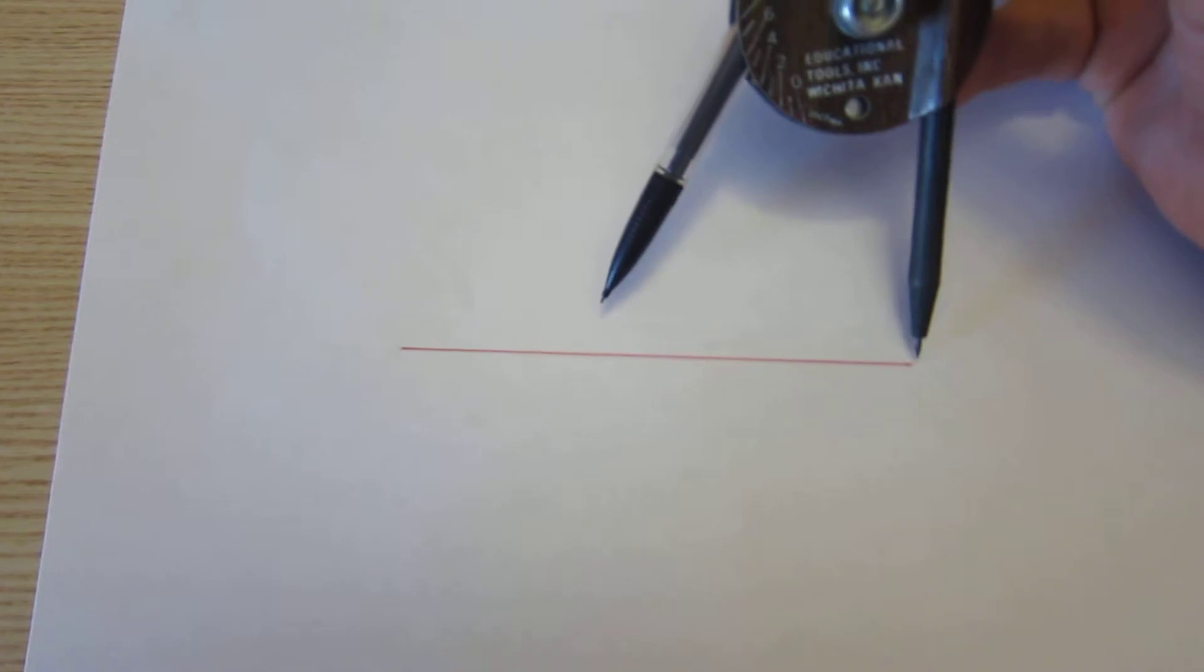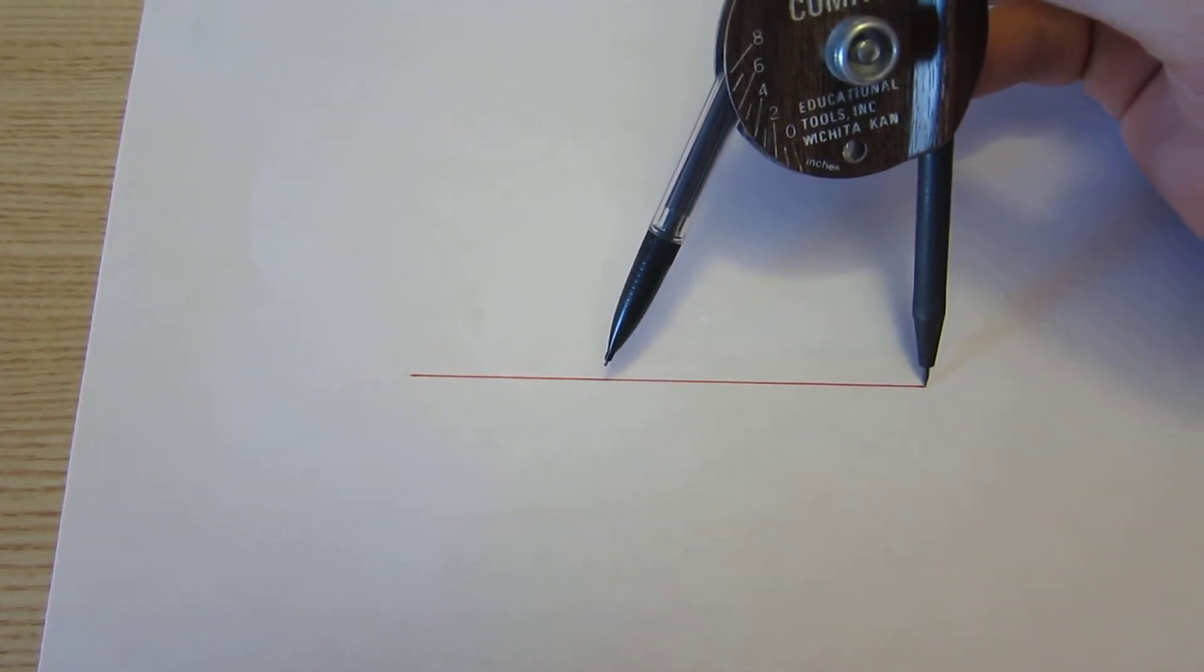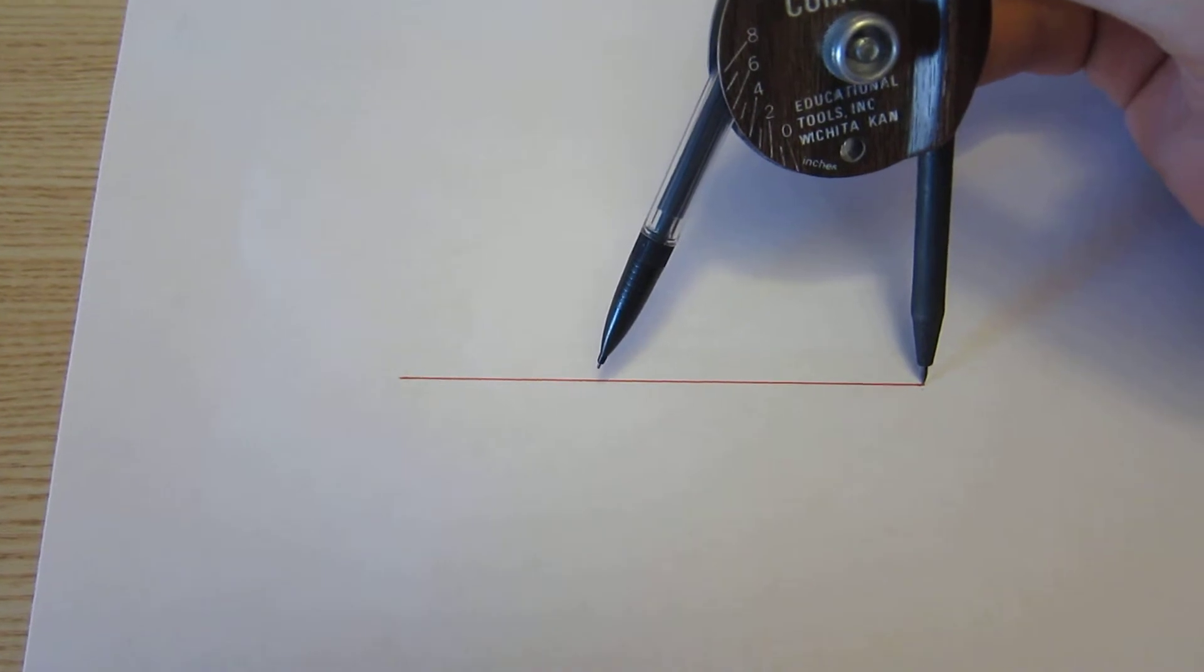Pick up your compass and put the point on the right side. Make sure your compass is more than halfway across the line, and you have to do this by eyeballing it.